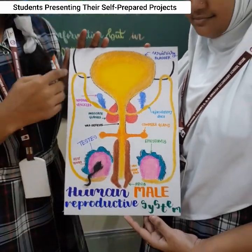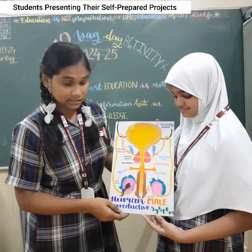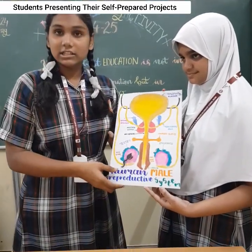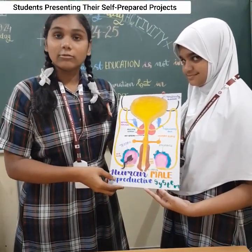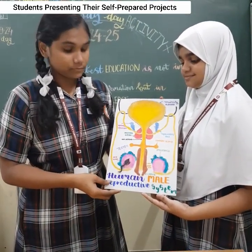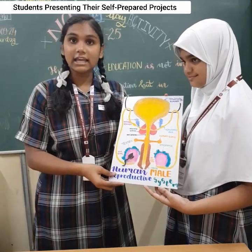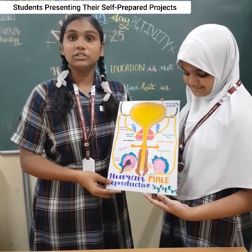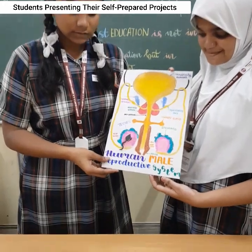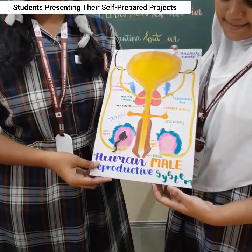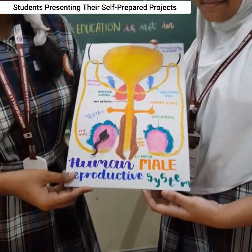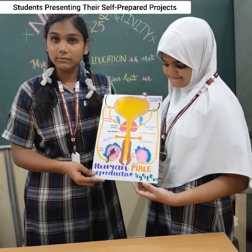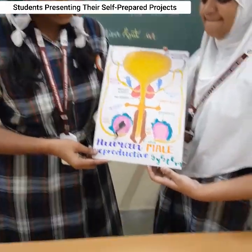The male reproductive system includes a pair of testes, various ducts, glands, and penis. The testes are present in the scrotum outside the abdominal cavity. The testes is the primary organ of the male reproductive system which produces sperm. The sperm here are immature sperm, which will pass through a sequence of glands and ducts.